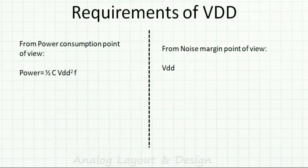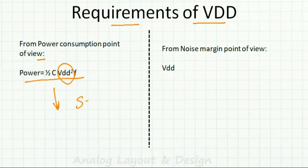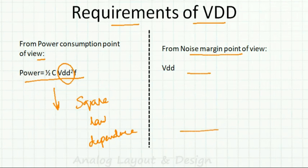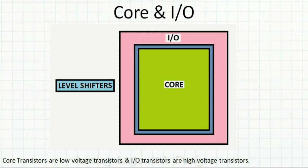So we have contradictory requirements for VDD. From a power consumption point of view — where power is ½CV²F — we want VDD to be as low as possible due to the square-law dependence. But from a noise margin point of view, we want VDD to be as high as possible. How do we solve this problem?